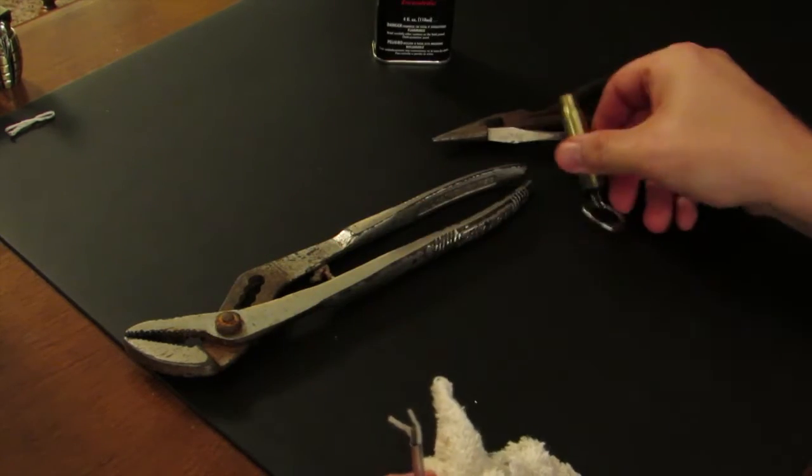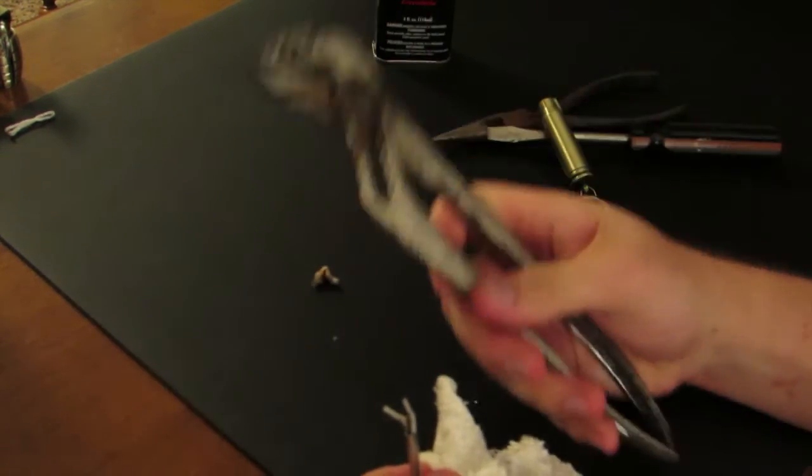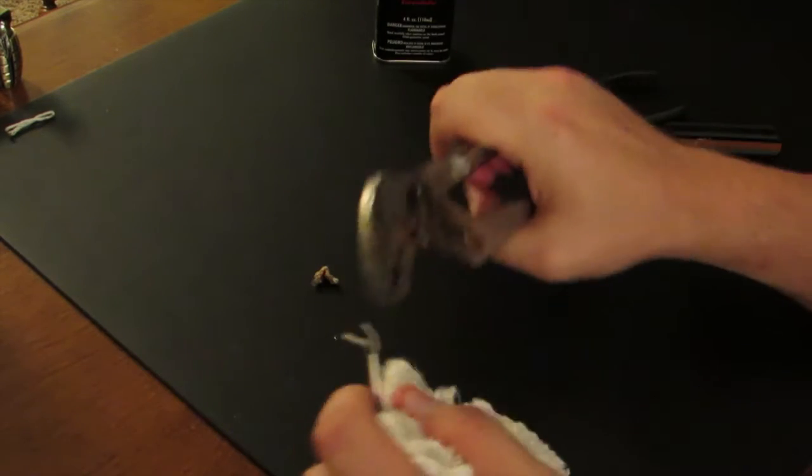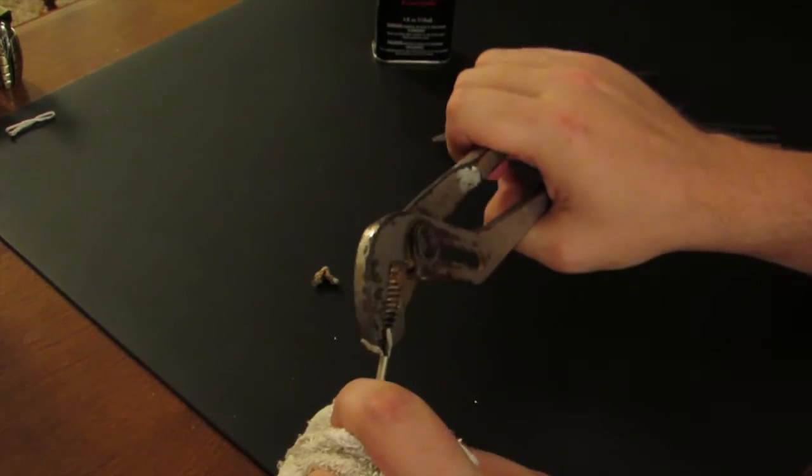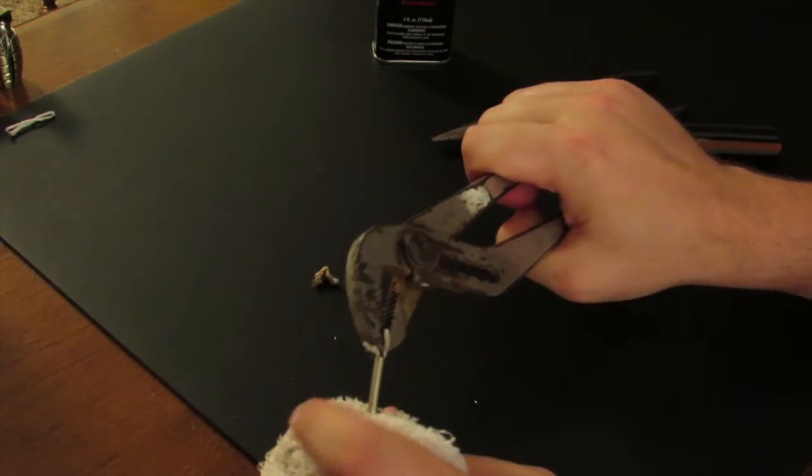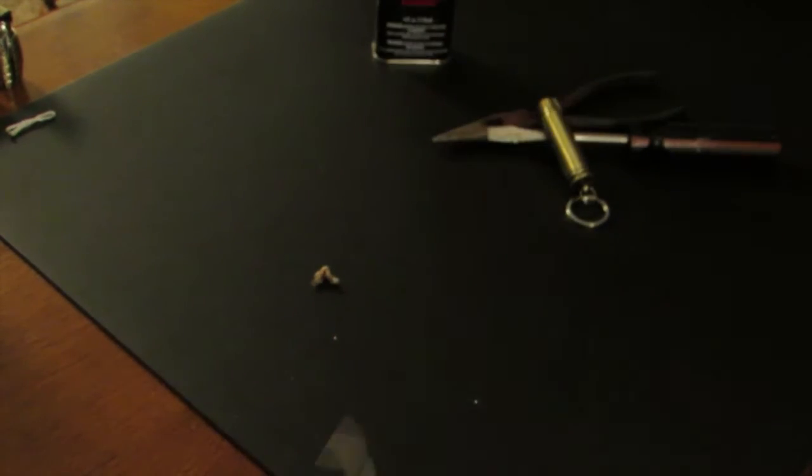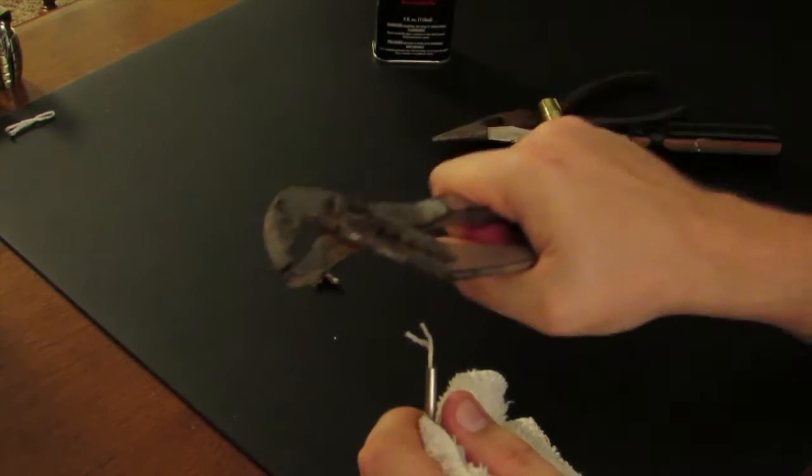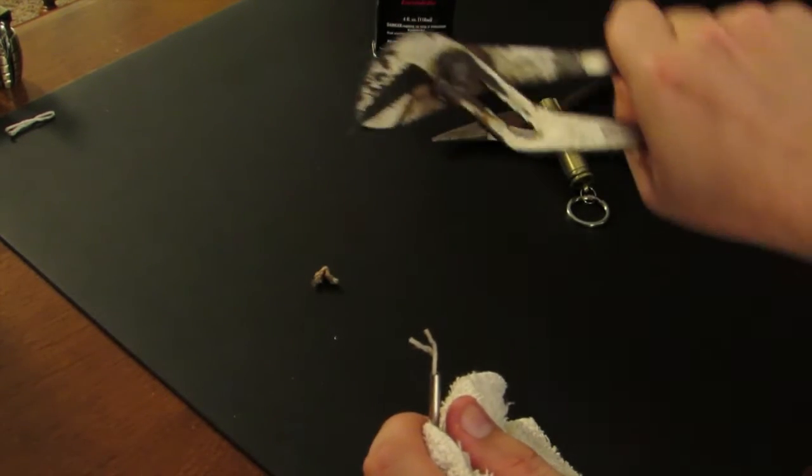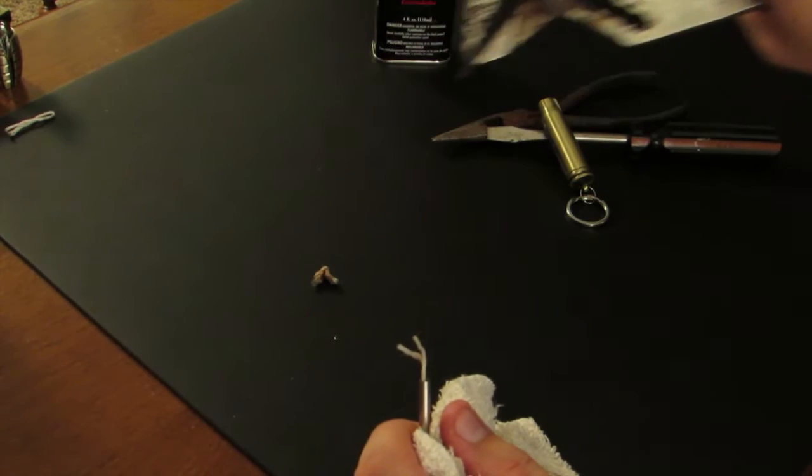Take some pliers or needle nose pliers, either one. And you're going to take this, get the nib, and use a little pressure and pull straight forward. Don't pull down or up. Pull this way.